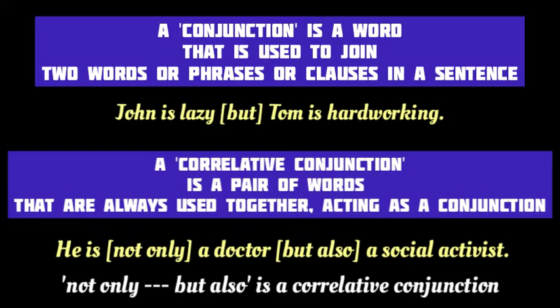For example, in the sentence 'He is not only a doctor but also a social activist,' 'not only...but also' is a Correlative Conjunction. As you can see, it is joining the two nouns — 'a doctor' and 'a social activist.' In this way, a Correlative is a pair of two words or expressions doing the work of a conjunction.